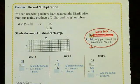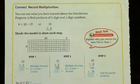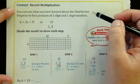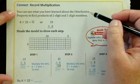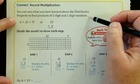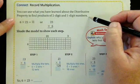Okay, this is one more way that we can use the distributive property and one more strategy we can add to our toolbox to do one digit by two digit multiplication. It says connect record multiplication. You can use what you've learned about the distributive property to find products of two digit and one digit numbers.